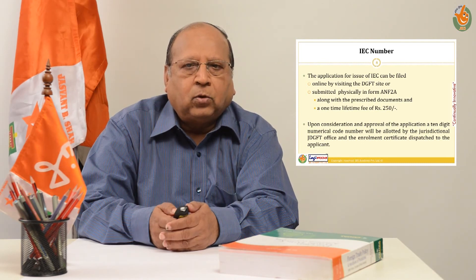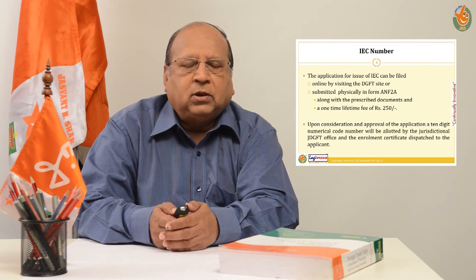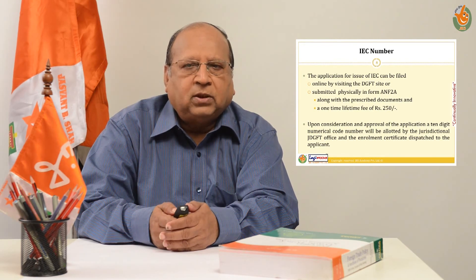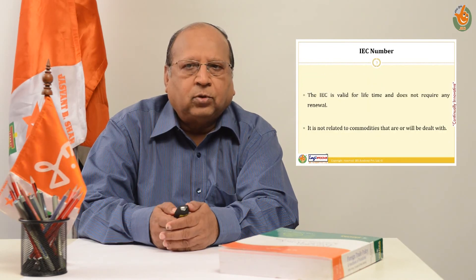Upon consideration and approval of the application, a 10-digit numerical code number will be allotted by the Jurisdictional Joint DGFT Office and the enrollment certificate dispatched to the applicant. The IEC certificate will show the name and address of the applicant, the addresses of his branches and divisions, if any, income tax PAN number details, the 10-digit code number, and the stamp with signature of the issuing authority with the file reference and any certain remarks and notes.